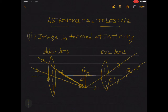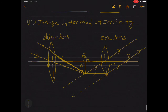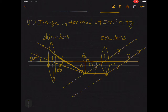The two rays we are considering here — if we produce them backward, we will see the two rays are parallel to each other. So the final image is formed at infinity. The two angles are similar here: theta_i and theta_o. This is how we can draw the ray diagram of image formation by astronomical telescope.